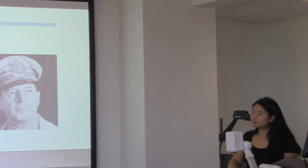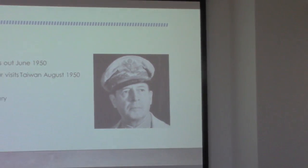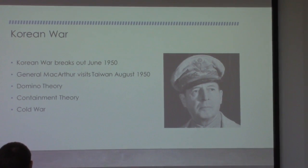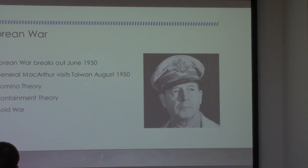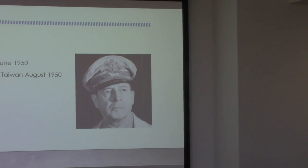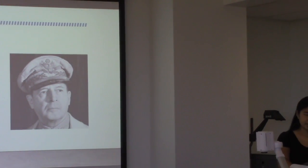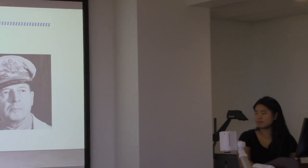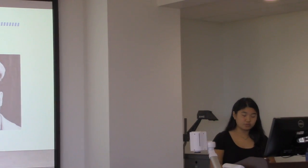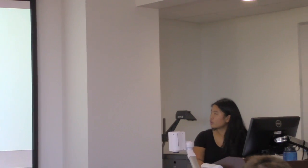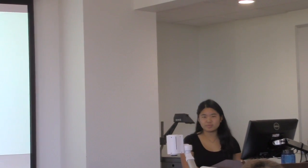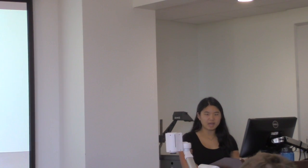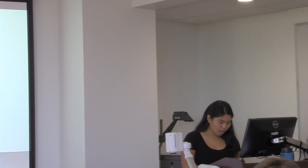General MacArthur played a significant role in the Pacific theater, visiting Taiwan in August 1950 to judge its defensive capabilities. He worked with Chiang Kai-shek and greatly admired him for his efforts to resist communism. The domino theory and containment theory played a lot into this, because defensive bases in Taiwan would be necessary to contain communism inside China — they were afraid of East Asia falling into communism.